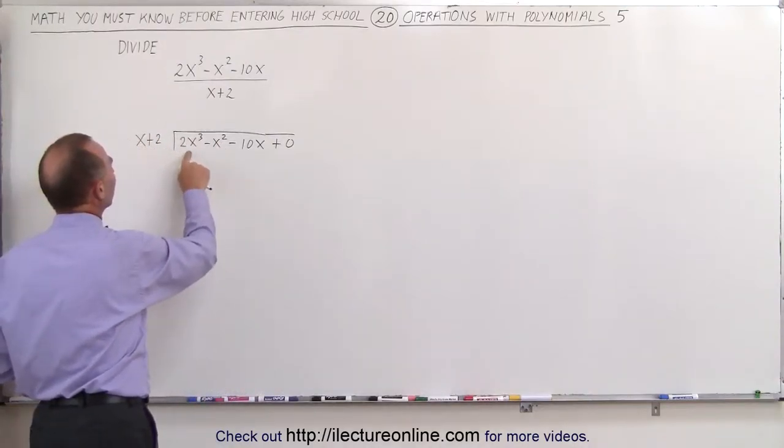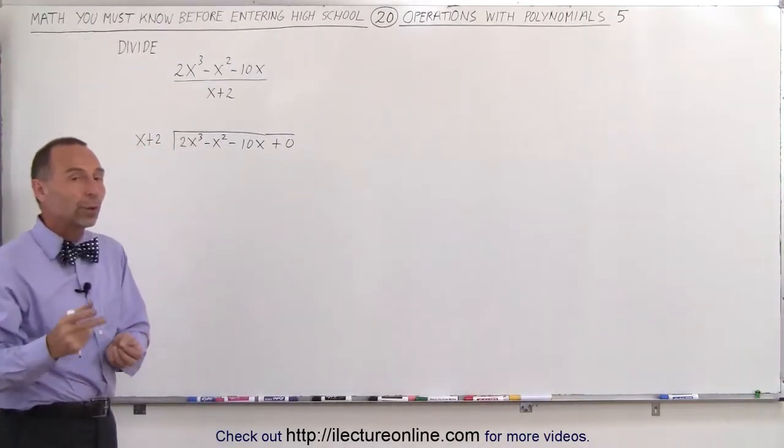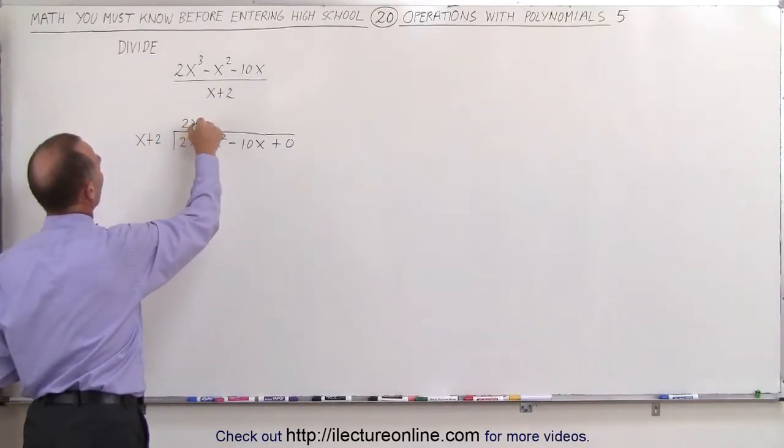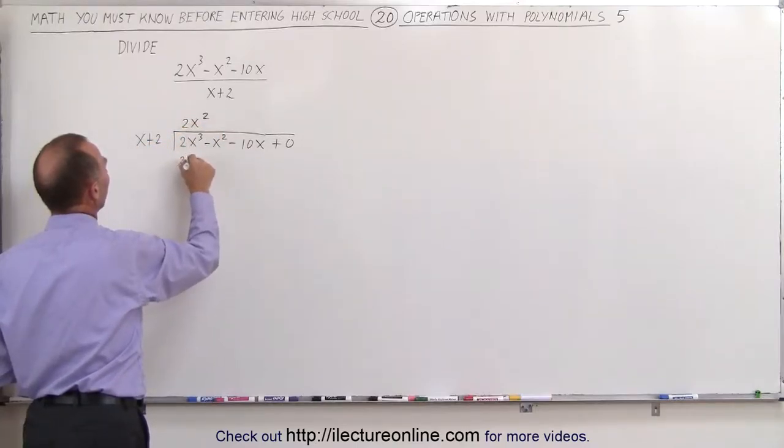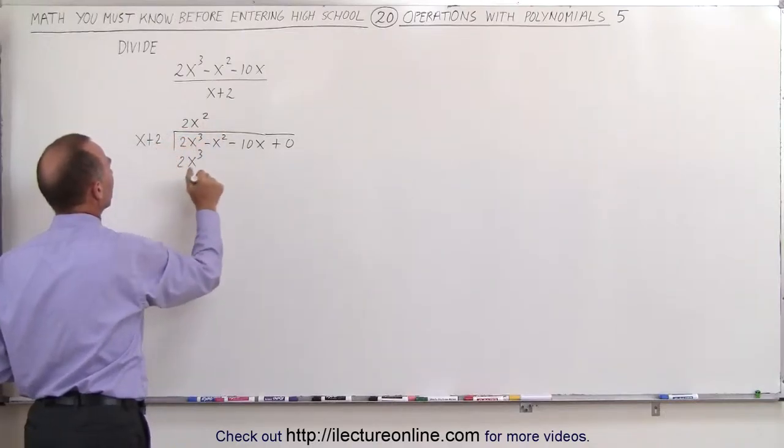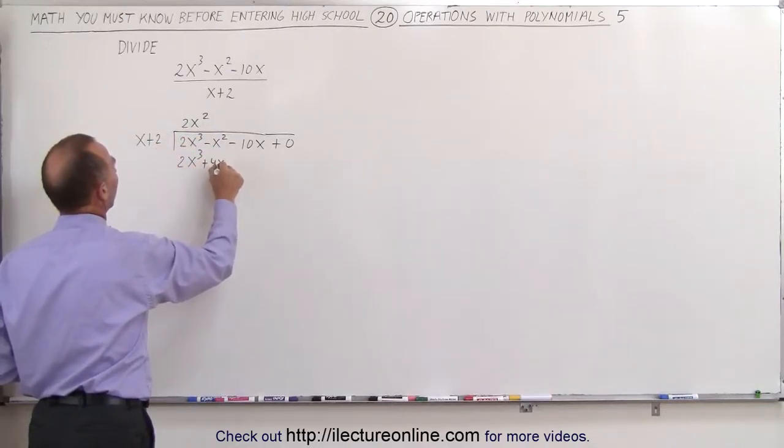So x goes into 2x cubed how many times? In other words, what number must we multiply times x to get 2x cubed? And the answer is 2x squared, because 2x squared times x gives us 2x cubed, and we also must multiply the 2x squared times a 2 to give us plus 4x squared.